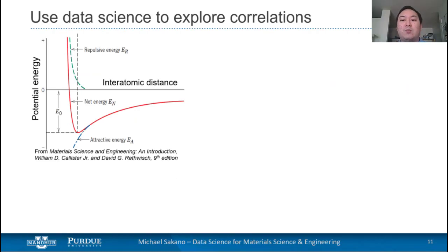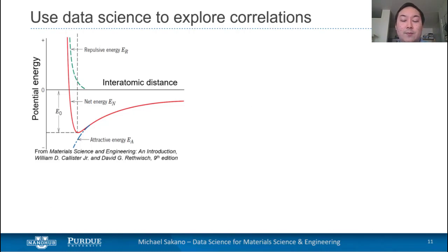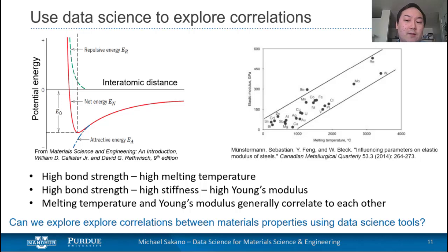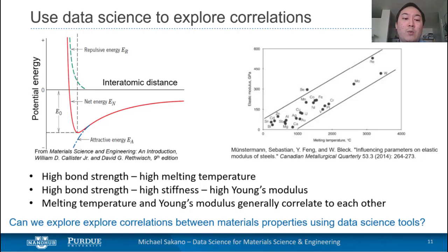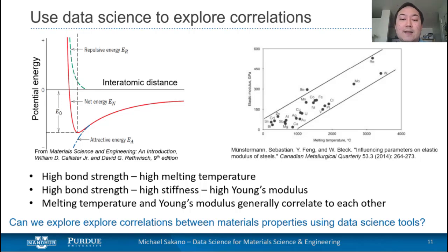A second example we'll be exploring in the hands-on section is to use data science tools to explore correlations between materials properties from common origins. Many properties of a material actually depend on the interaction between atoms, as shown schematically on the left. Usually, high bond strength tends to lead to higher melting temperature, which in turn is correlated with higher stiffness. So can we actually explore these correlations between bond strength, stiffness, and melting temperature of various materials using data science tools?